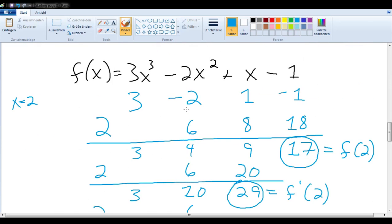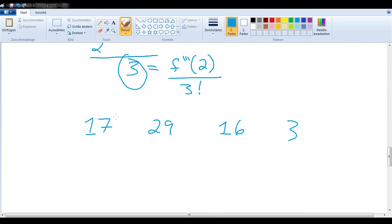So we have here 17 times x minus p was 2 to the 0th power. Of course we can leave that out. The 0th power just gives us a 1 anyway.